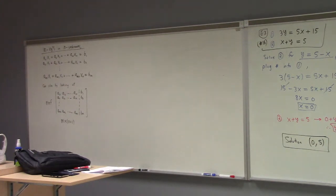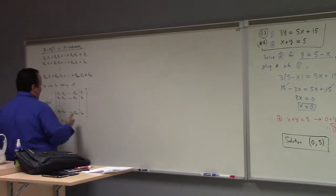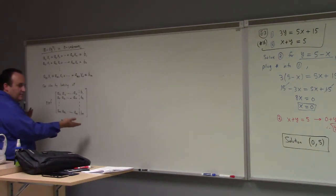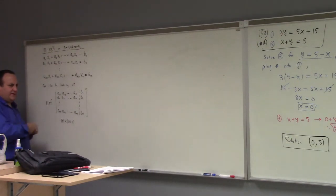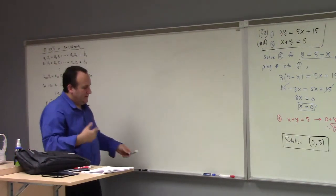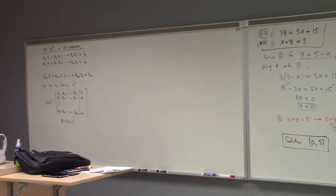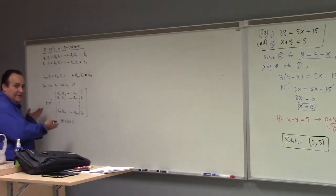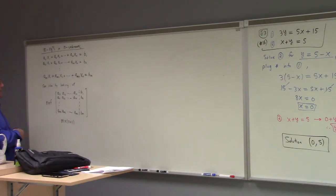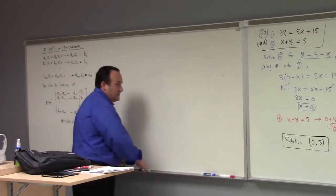It turns out that problem can be solved in the same way we saw before — there's either a unique solution, no solution, or infinitely many solutions. Now, you can solve this by looking at what's called the reduced row echelon form of the augmented coefficient matrix: a₁₁, a₁₂, ..., a₁ₙ, b₁, b₂, ... This is called an m by n+1 matrix. If you put this into a calculator — like a TI-84 or higher — and compute the reduced row echelon form, you can read the answer off. I'll show you a website that does it. I'm not going to ask you to learn that — that's just for your information.